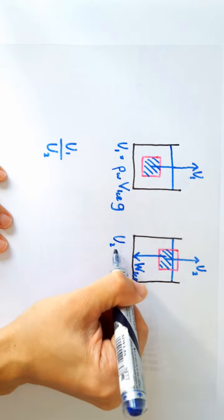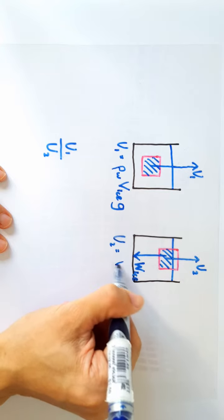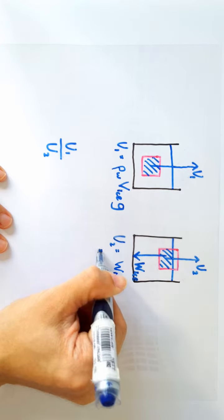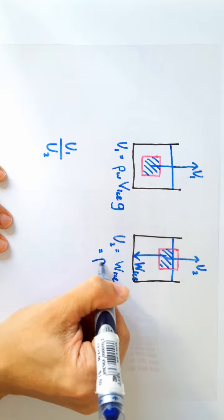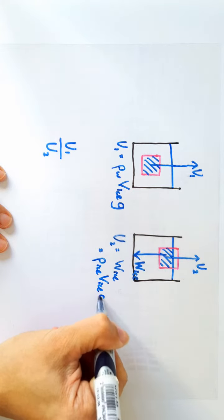So for the second upthrust here, we are going to write it as equals to the weight of the ice, which can be written as the density of the ice block times the volume of the ice block times g, of course.